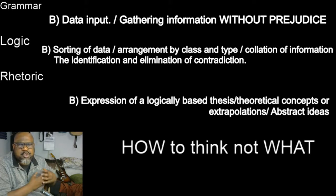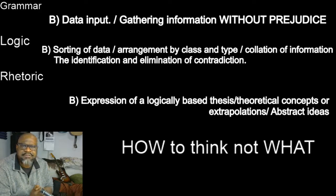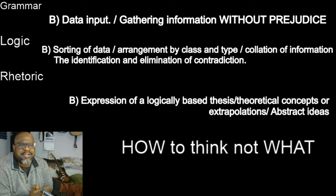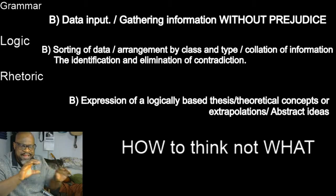Our next step is to sort this information, the sorting of data, the arrangement by class and by type, the collation of information and the identification and the elimination of contradiction. We have first gathered data. Now we are processing said data, putting things where they belong, arranging things as they are, which makes it easy to make very accurate comparisons.